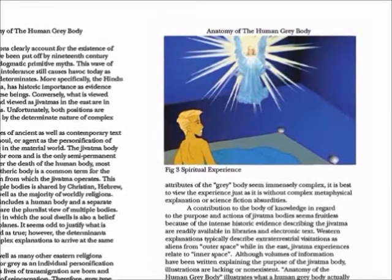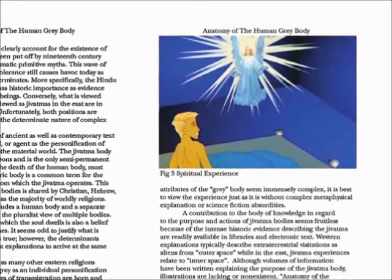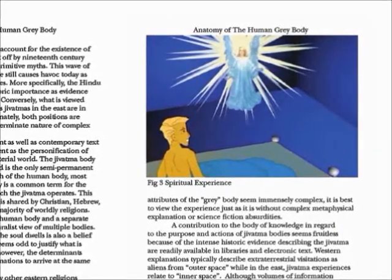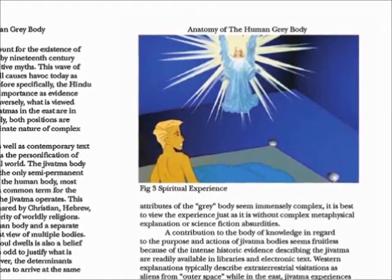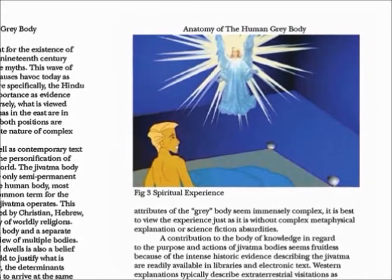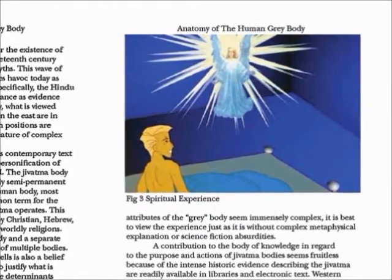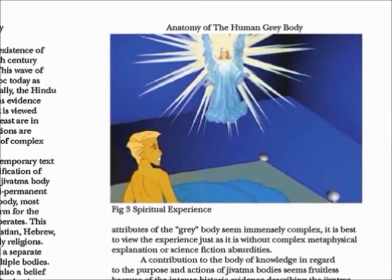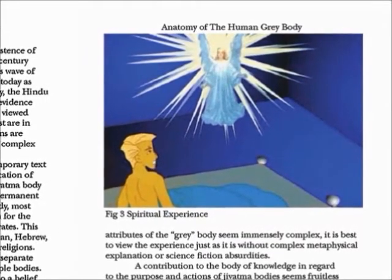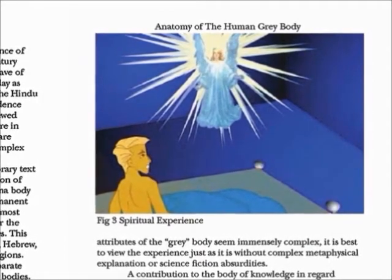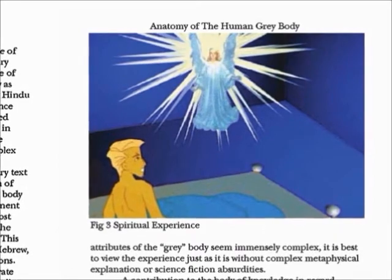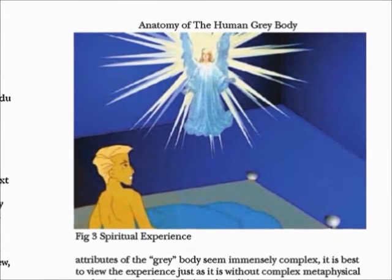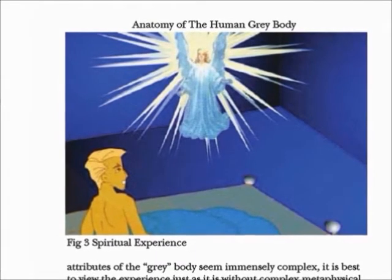Gray encounters are not a new age phenomenon, as plotted on the Roswell, New Mexico timeline marked by the reported UFO crash of 1947. Ancient religions clearly account for the existence of these entities, but had been dismissed by 19th century Christian linguistic framing as dramatic primitive myths. This wave of religious intolerance still causes havoc today as embedded linguistic determinants. The Hindu term 'atma' or 'jivakma' has historic importance as evidence of these beings. What is viewed as 'gray' in the west and 'jivakma' in the east are, in fact, synonymous terms — though both positions are considered credulous due to the deterministic nature of complex languages.